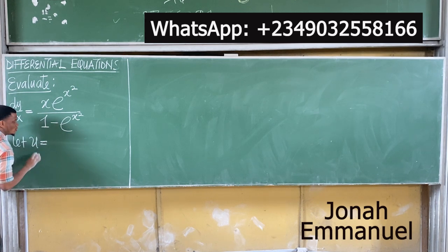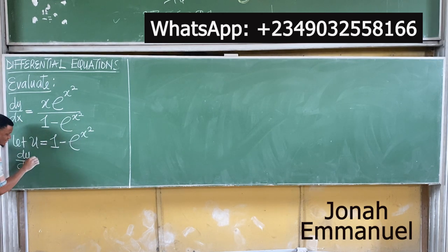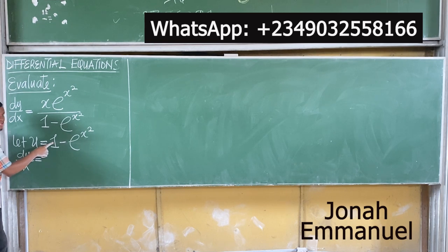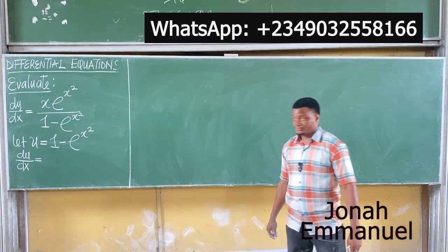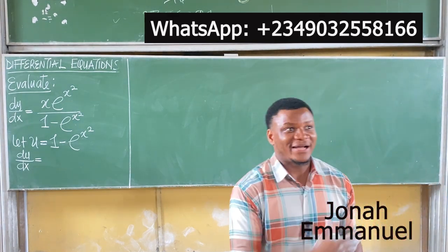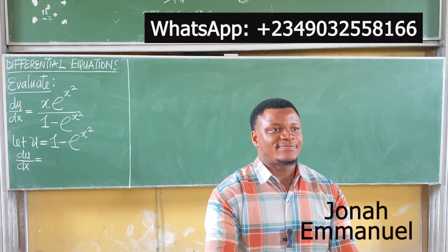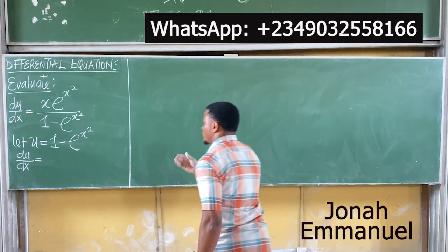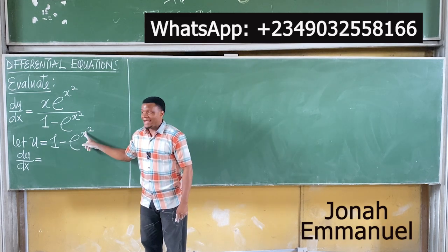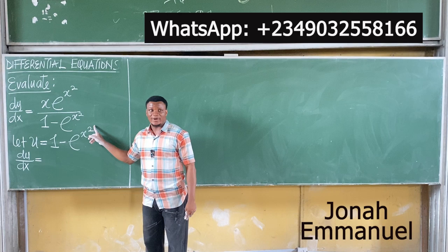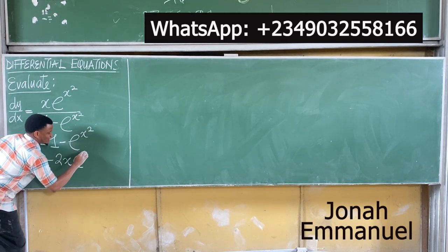Let u be equal to 1 minus exponential x squared. What's du/dx? Differentiating: differential of 1 gives zero, differential of minus exponential x squared — using the shortcut for exponential differentiation, focus on the power x squared, differentiate it to get 2x, bring 2x down. So du/dx equals minus 2x times exponential x squared.